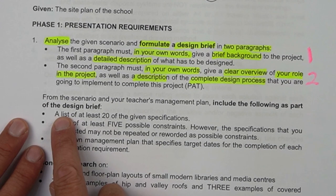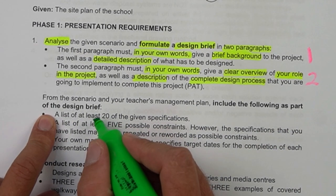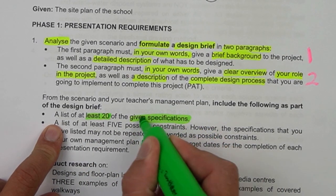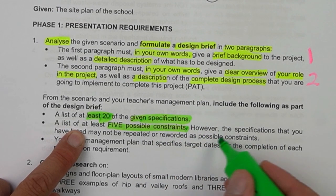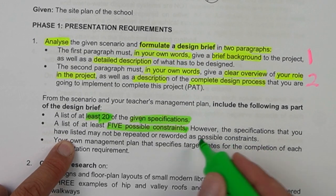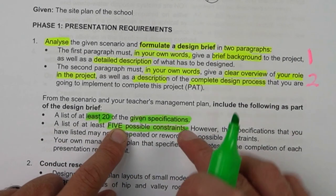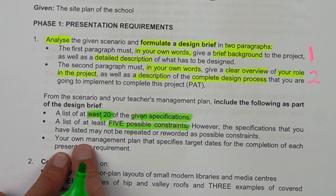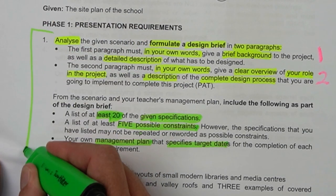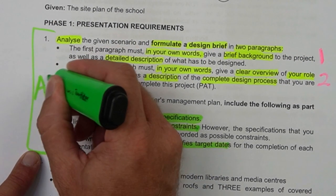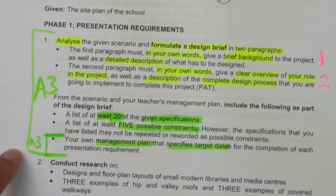What else is required from this scenario? Your teacher's management plan - which is the pace setter - includes the following as part of this design brief: you have to come up with at least 20 of the given specifications, then list at least five possible constraints. However, the specifications you have listed may not be repeated or reworded as possible constraints - these constraints must be unique. You also have to come up with your own management plan that specifies target dates for the completion of each presentation requirement. All of this should fit on an A3 page, with only the management plan getting its own separate A3 page.